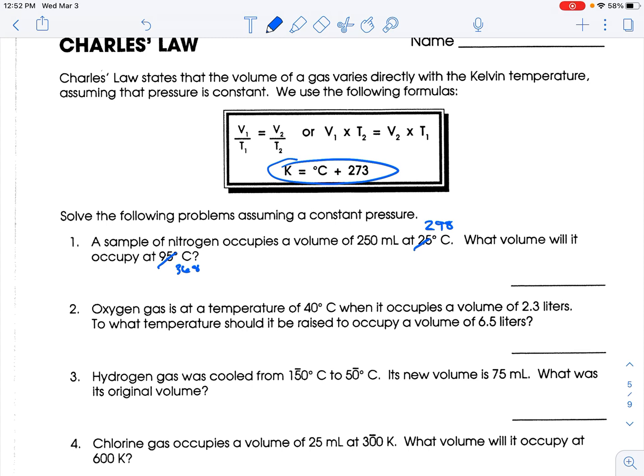So we have volume 1, which is 250. Temperature 1, which is 298. We are looking for our next volume, and then this is 368. So 368 times 250, because we're going to cross multiply, is 92,000 equals 298 times V2. Divide both sides by 298, and you get 308.72.